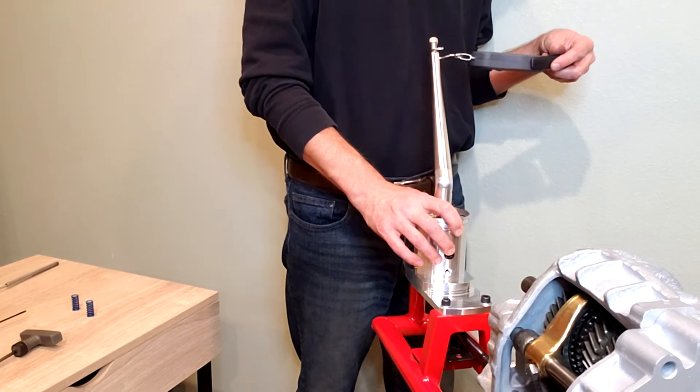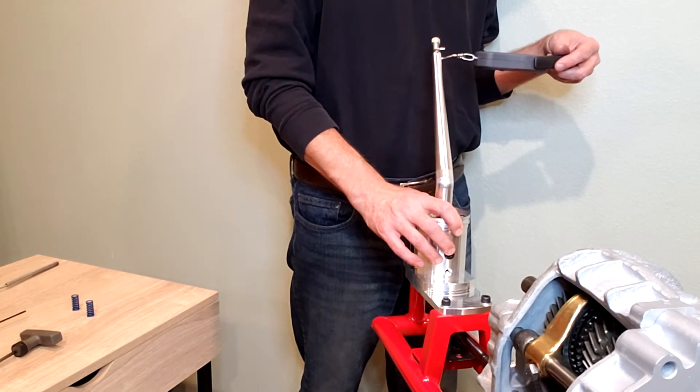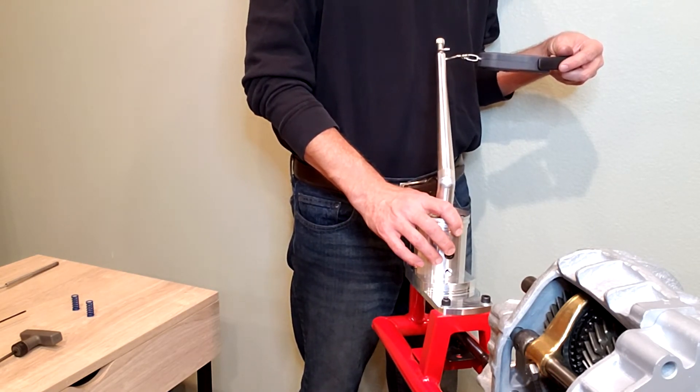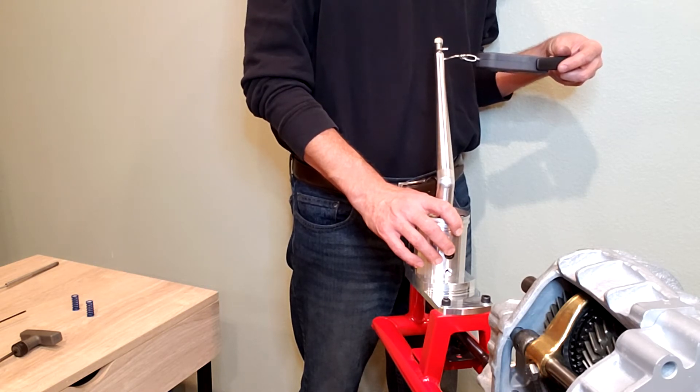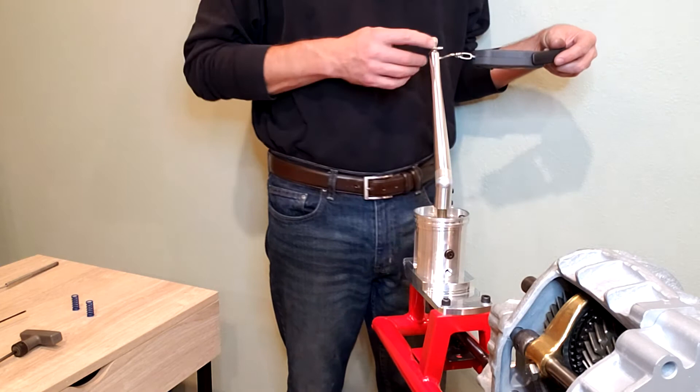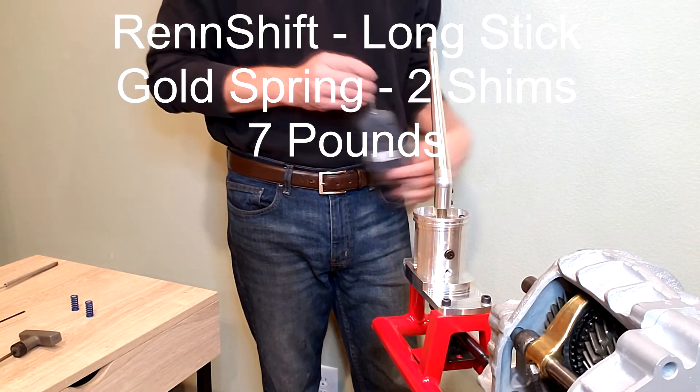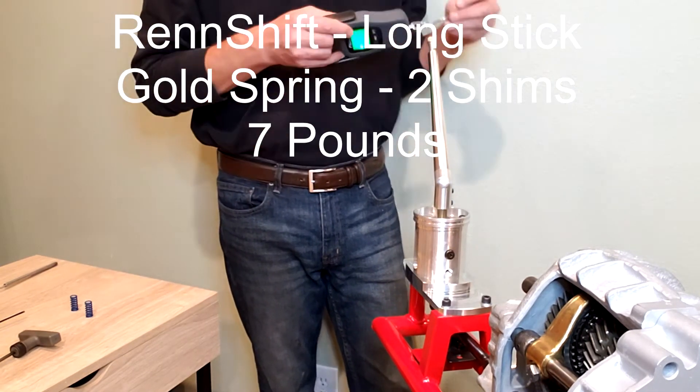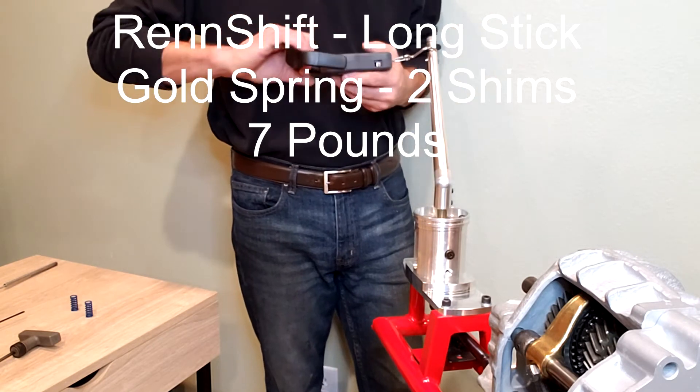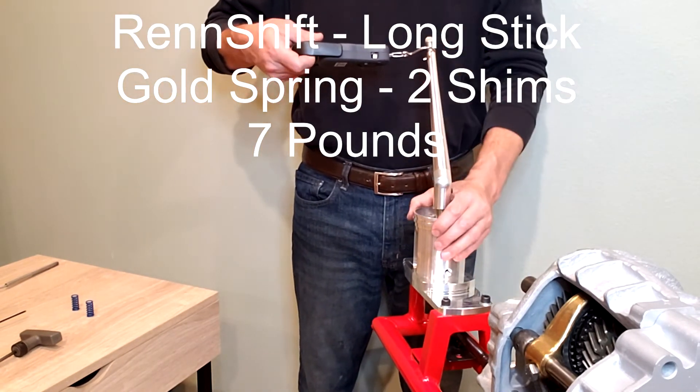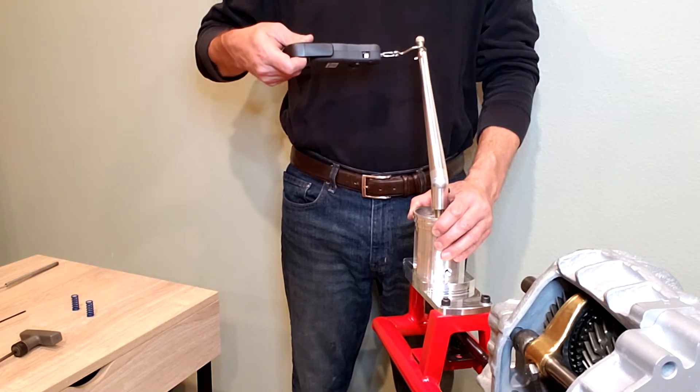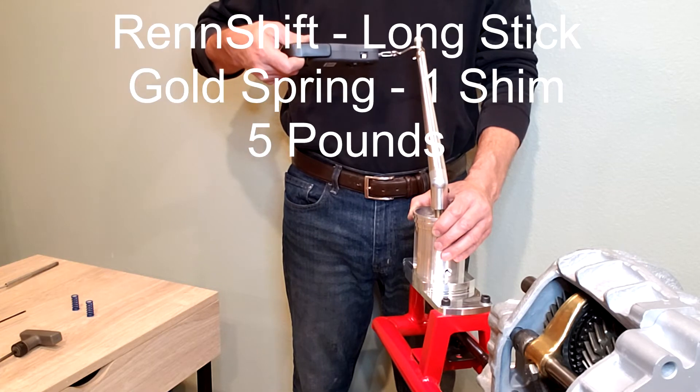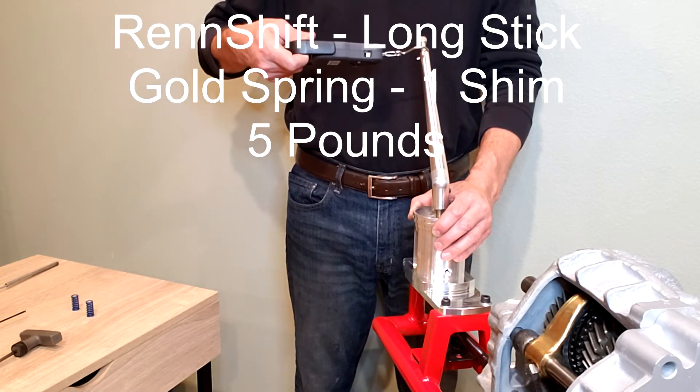We'll apply our force here. And the heaviest configuration, gold spring two shim washers gives us approximately seven pounds. Move to the opposite side. And we end up with approximately five pounds, gold spring with a single.